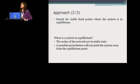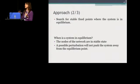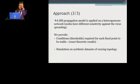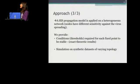So what are we trying to do? We're trying to find some fixed points where this system is not going to change state — it's going to be in equilibrium. The system is in equilibrium when the nodes don't change state. We want the system to be stable, so that no perturbation can change the state of the network. We use the SIS propagation model applied on a heterogeneous network, where nodes have different sensitivity, and we provide all the conditions required for every fixed point to be stable.